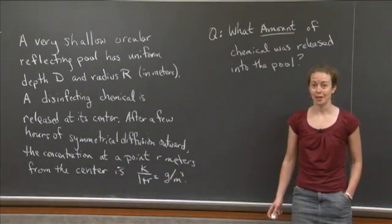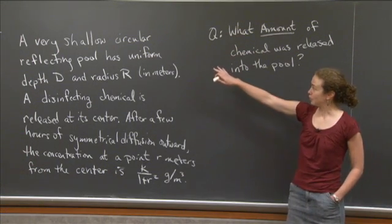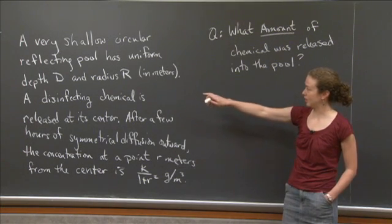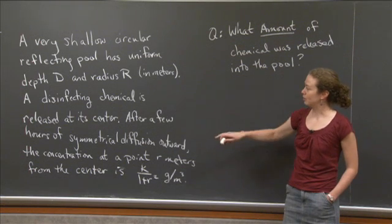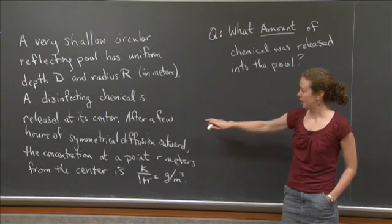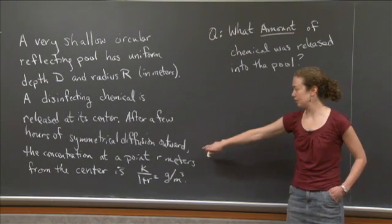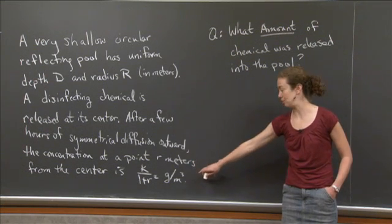Welcome back to recitation. In this video, I want us to work on the following problem. A very shallow circular reflecting pool has uniform depth D and radius R in meters. A disinfecting chemical is released at its center after a few hours of symmetrical diffusion outward. The concentration at a point little r meters from the center is k over 1 plus r squared grams per cubic meter. The k here is a constant.